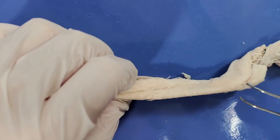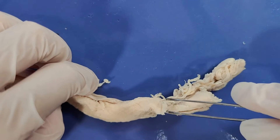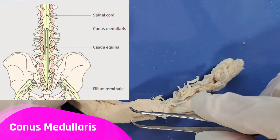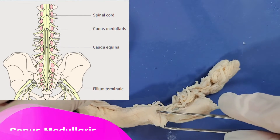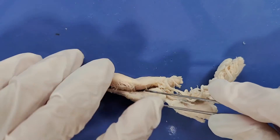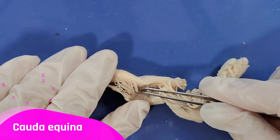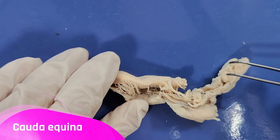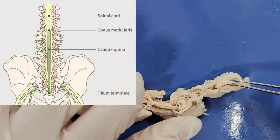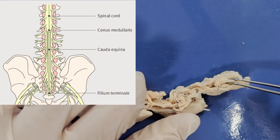Now at the lower end of the spinal cord you can see that it tapers off in this triangular shape. This is called the conus medullaris, and below that are these bundles of spinal nerves — you can see them if I tilt it right here — and these are called the cauda equina. You can see more of them around here. Cauda equina means 'horse's tail' in Latin, and these nerves kind of look like a horse's tail.